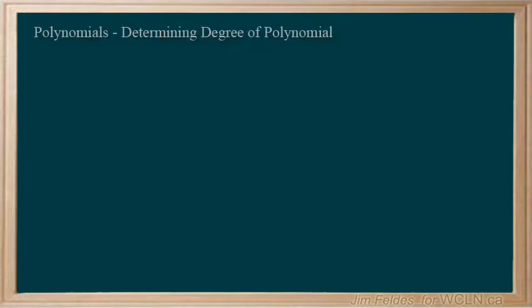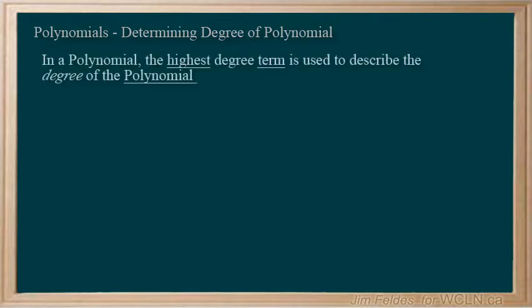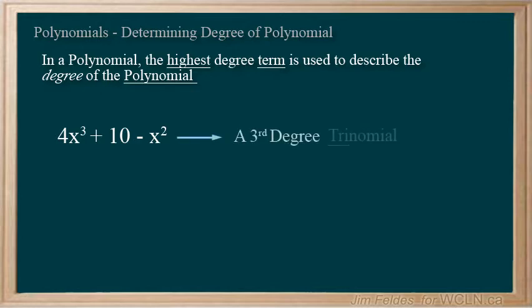Finally, now that we are comfortable with identifying the degree for a term, we can apply our understanding to describe the degree of the polynomial itself. We simply use the highest degree term to describe the degree of the entire polynomial. The highest degree term is found in the 4x to the third. And since the polynomial has three terms, we can now describe it as a third degree trinomial.